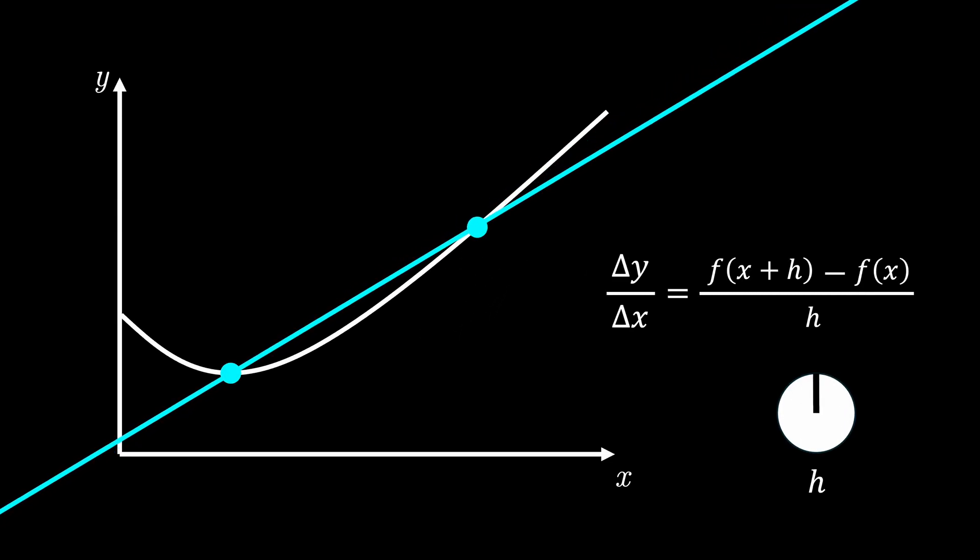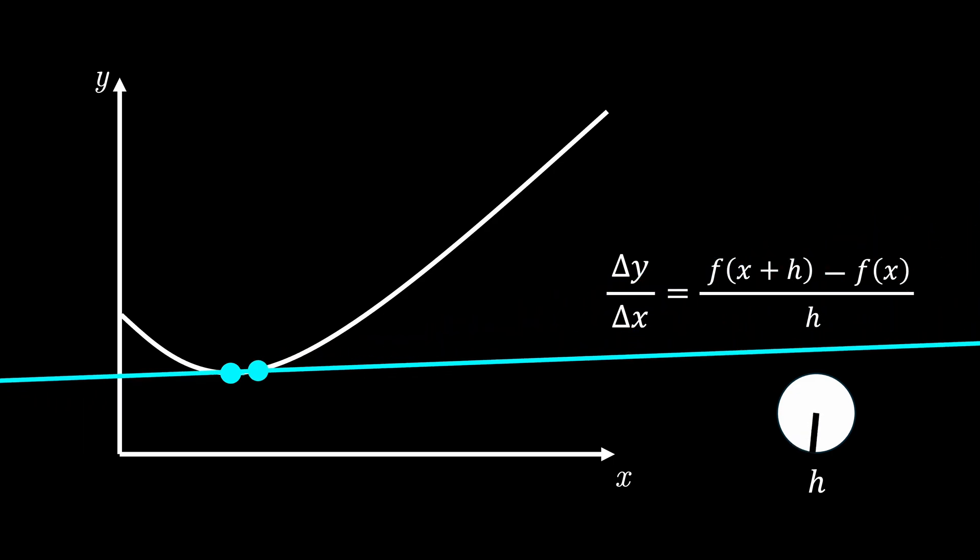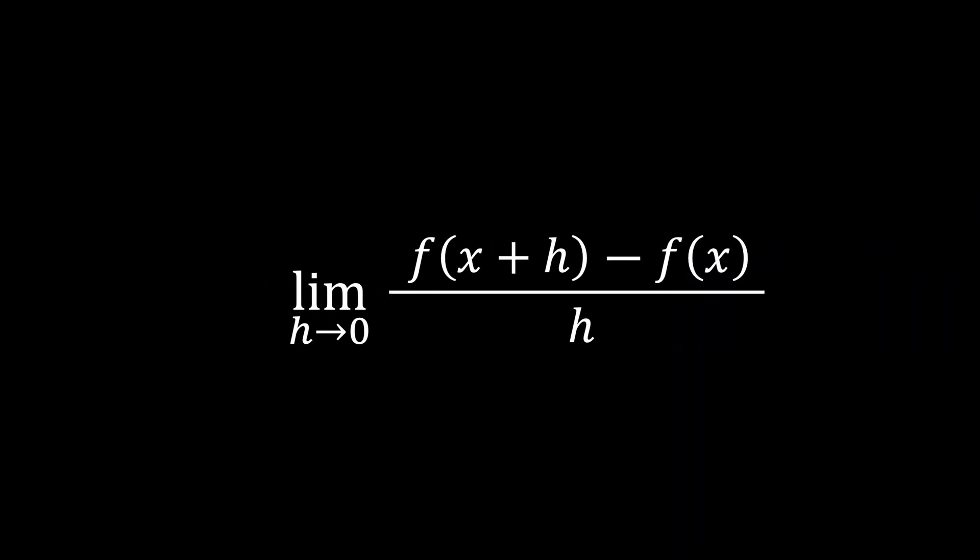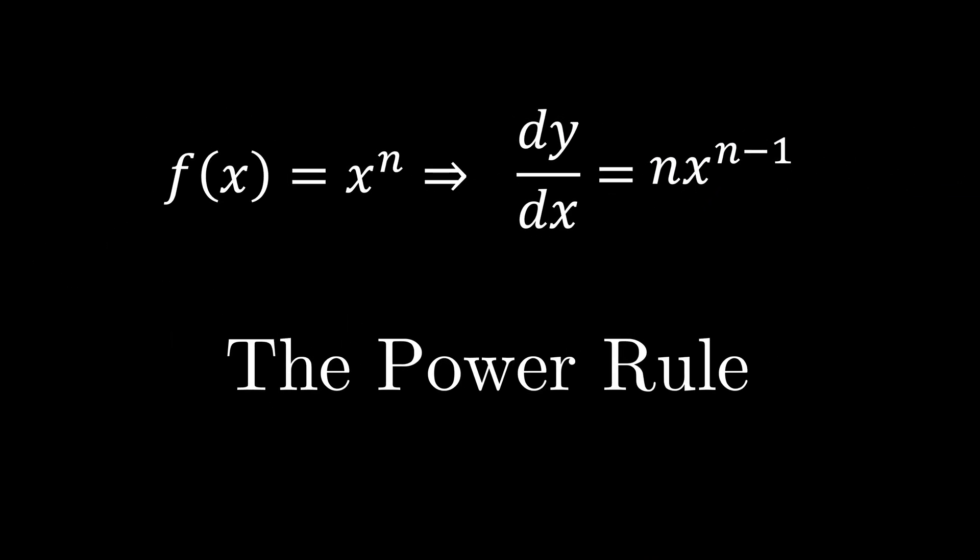Differentiation finds the exact gradient of a curve at a point. It uses limits to avoid division by 0, and the power rule makes differentiation much faster for functions like x to the power of n.